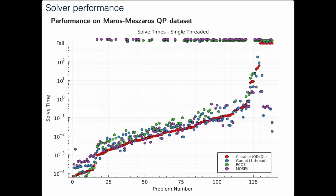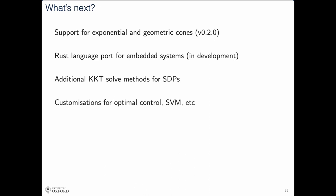What is next for this solver? We've released version 0.1. Shortly we will release another version supporting exponential and geometric cones, likely version 0.2. On the side, we've been developing a Rust language port for use on embedded systems — actually this whole project was initially meant to be just a prototype for the Rust implementation, but working with Julia was so nice that we decided to release it as its own package and will continue to support it. Beyond that, we'll add additional KKT solve methods for SDPs, and start populating the flexible abstract data type structure with customizations for different optimization problems, particularly starting with optimal control and probably SVM.